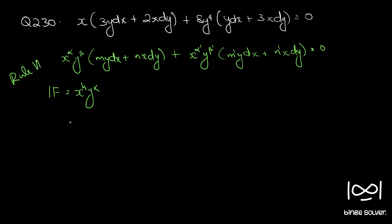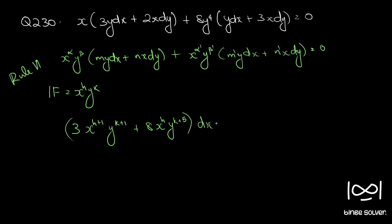So we have 3 into x·y, giving x raise to h plus 1 into y raise to k plus 1 as the first dx term. The other dx term is 8y raise to 5, giving 8 x raise to h into y raise to k plus 5.